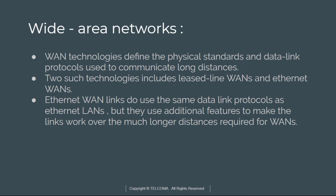For Leased Line WANs, the enterprise network engineer orders some kind of WAN link. A router at each site connects to both the WAN link and the LAN. Ethernet WAN links use the same data link protocols as Ethernet LANs, but they use additional features to make the link work over much longer distances required for Wide Area Networks.